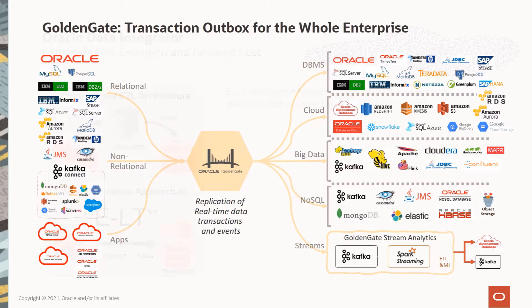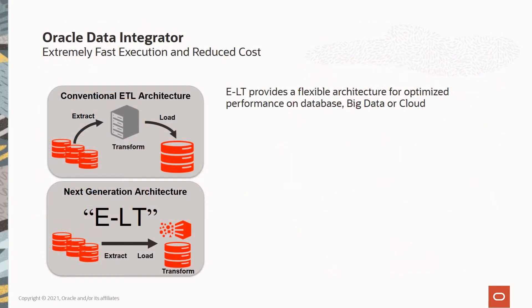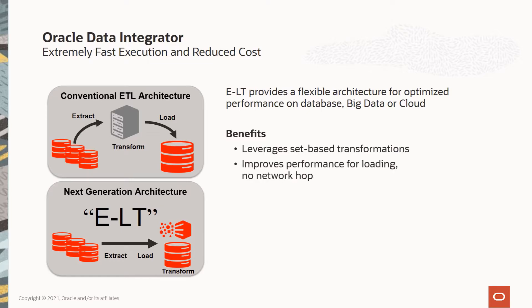Did you know that ODI uses ELT for extreme performance? ODI is used to run batch jobs that move and transform bulk data sets to populate targets like a data warehouse. It leverages an architecture called ELT, which stands for Extract, Load, and Transform, and eliminates the need for a mid-tier standalone ETL server. If you don't need GoldenGate's real-time data movement and transformation capabilities, then ODI is a great fit.